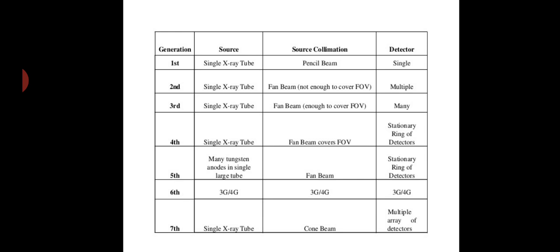There are the differences between all the generations which we have read so far. The first generation: the source is single x-ray tube, source collimation is pencil beam, and detector used is single. In second generation: single x-ray tube, fan beam, and detectors used were multiple. In third generation: single x-ray tube, fan beam, and many detectors. In fourth generation: single x-ray tube, fan beam covers FOV, and stationary ring of detectors. In fifth generation: many tungsten anodes in single large tube, fan beam, and stationary ring of detectors. In sixth generation: 3G, 4G, source collimation is also 3G, 4G, and detector is also 3G, 4G. And in seventh generation: single x-ray tube, cone beam, and multiple array of detectors.